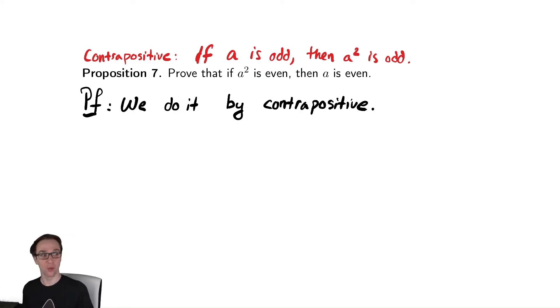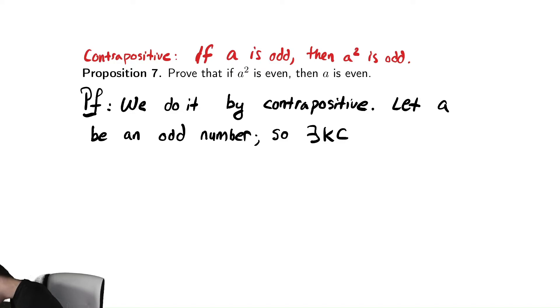So now, just like before, we're just starting with that red statement instead. I'm going to suppose that A is odd. So let A be an odd number. So there exists something, k, in the integers such that A is equal to 2 times k plus 1, just like we saw before. Odd numbers are 1 more than a multiple of 2.